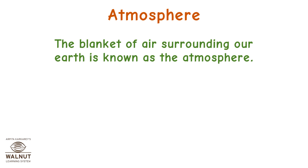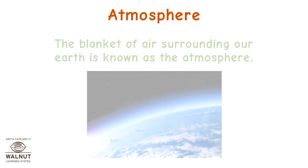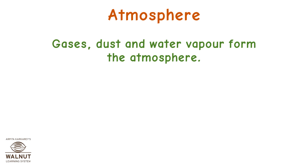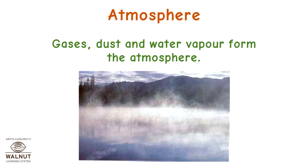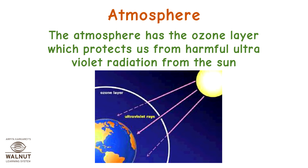Atmosphere. The blanket of air surrounding our Earth is known as the atmosphere. Gases, dust, and water vapour form the atmosphere. The changes in the atmosphere are responsible for the different climate and weather that we keep seeing. The atmosphere has the ozone layer which protects us from harmful ultraviolet radiation from the sun.